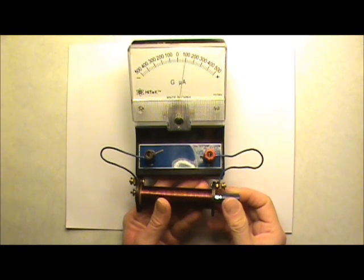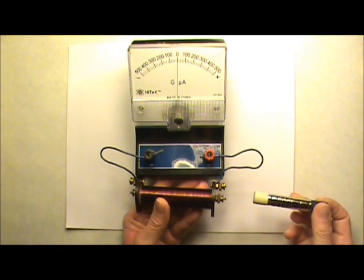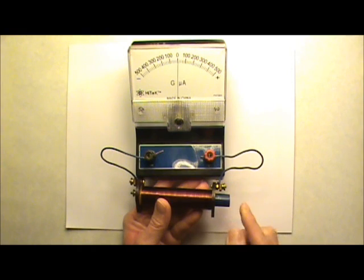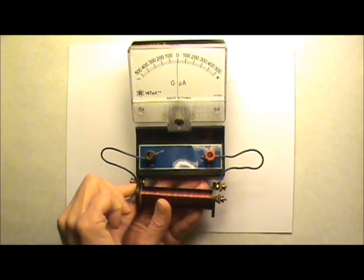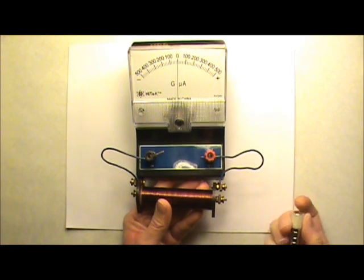If I remove the magnetic field inside the solenoid by pulling the magnet out, the needle goes to the right. I can get the same result if I remove the magnetic field by pulling it out on the other side. The needle also goes to the right.